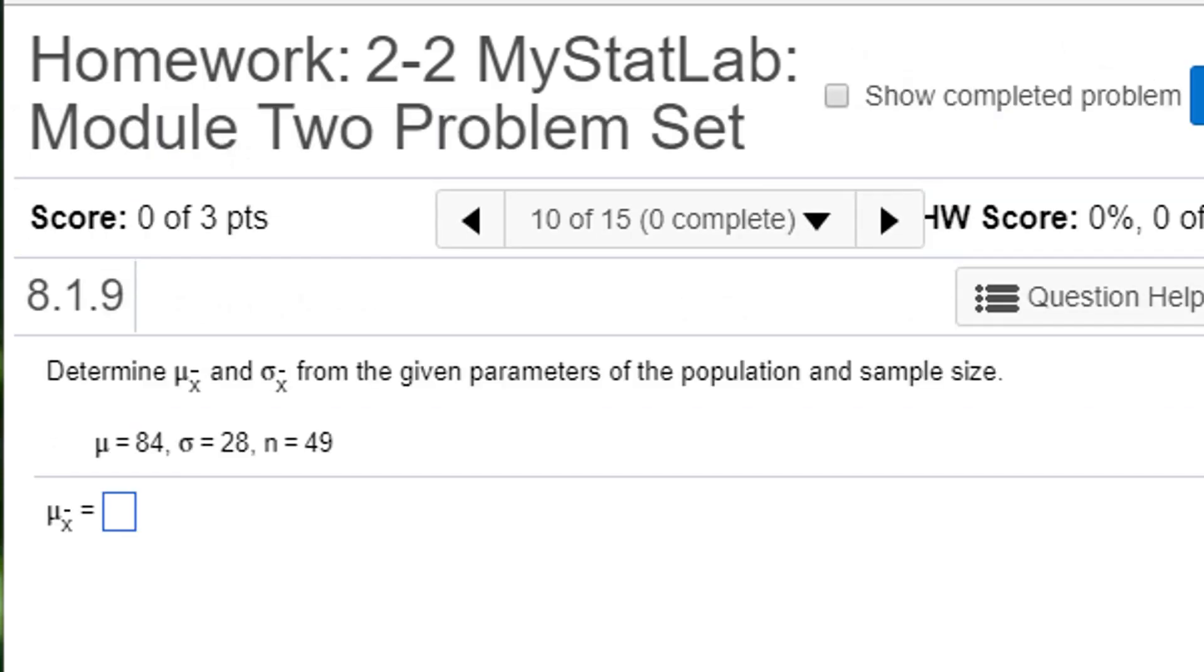So we want to determine the mean of x-bar and the standard deviation of x-bar. This is also known as standard error from the given parameters of the population and sample size. You're given the mean, standard deviation, and the sample size.